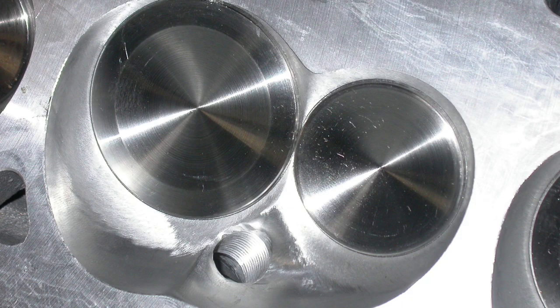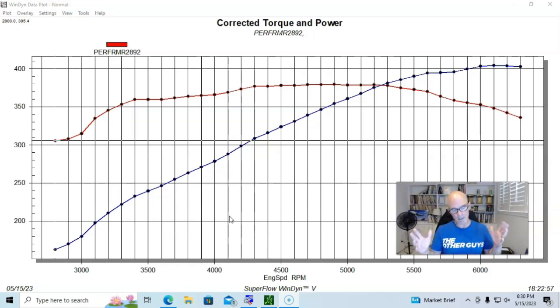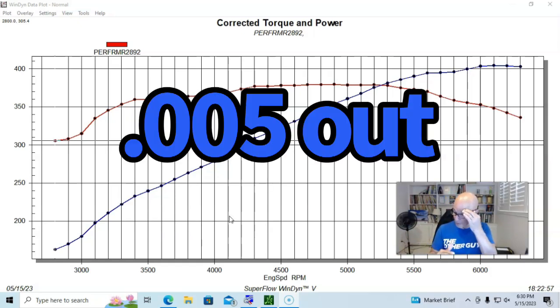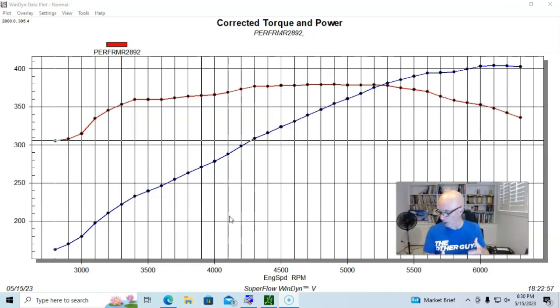The heads were milled 25 thousandths. This was 40 over as I mentioned, and the block was supplied way back when by the guys from Coast High Performance. The block had seen some machine work in its life, and so when we put this combination together with the piston, rod, and crankshaft assembly, the piston was actually out of the hole by about 5 thousandths, so it helped with our static compression.